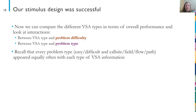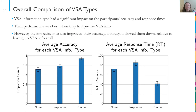Now we can compare the different types of VSA information in terms of overall performance. We found that VSA information type had a significant impact on participants' accuracy and response times. Their performance was best when they had precise VSA information, both in terms of highest overall accuracy and lowest response times. However, having imprecise information also improved participants' performance relative to having no VSA information at all. However, there was a speed-accuracy trade-off where having that imprecise information also slowed people down.